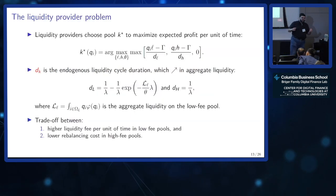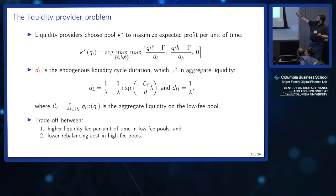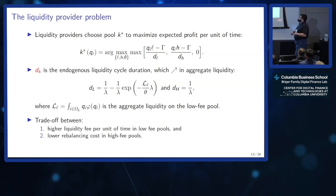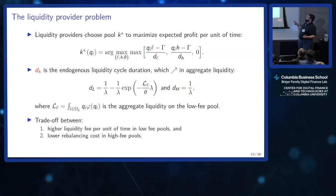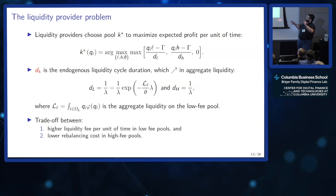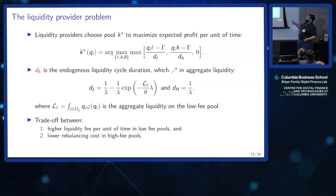As a liquidity provider, your problem is to choose whether to provide liquidity on each pool or stay out. You're maximizing expected profit per unit of time. If you go to the low-fee pool, your profit is your endowment times the low fee until you get traded out, minus the fixed cost each time the cycle ends and you rebalance, divided by the duration of the cycle. The same logic applies for the high-fee pool. The outside option is zero.